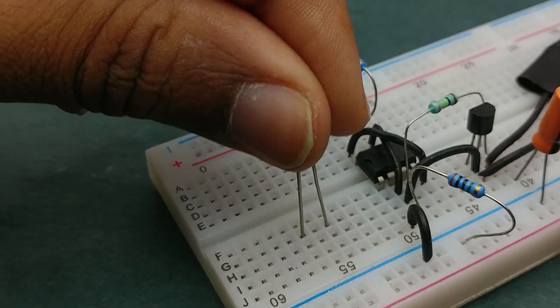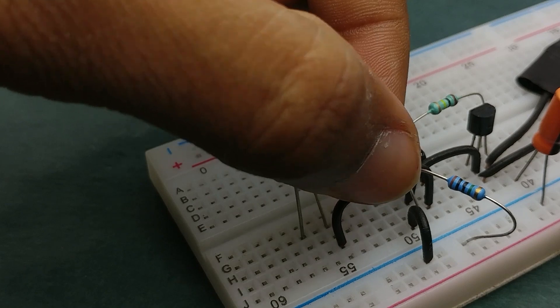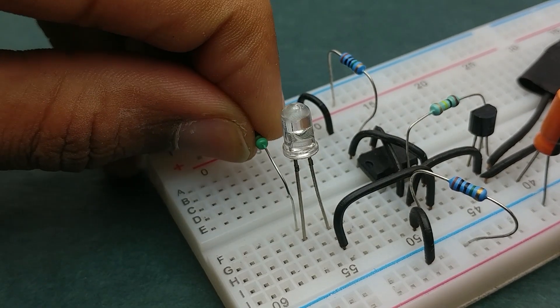Next place an LED on the breadboard. Connect its cathode to the output pin of 555 timer IC which is at pin 3 and connect its anode to positive rail via a series resistor.